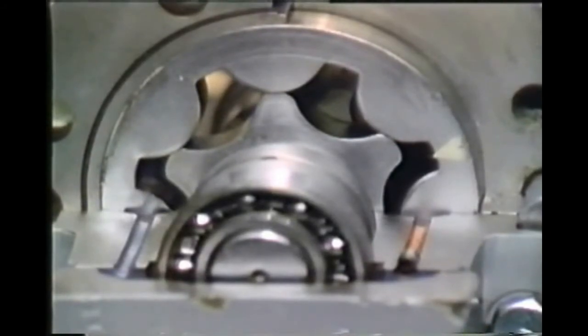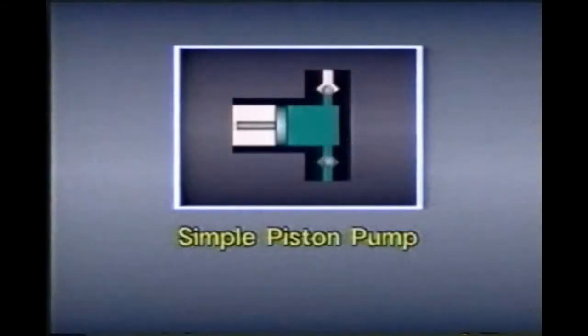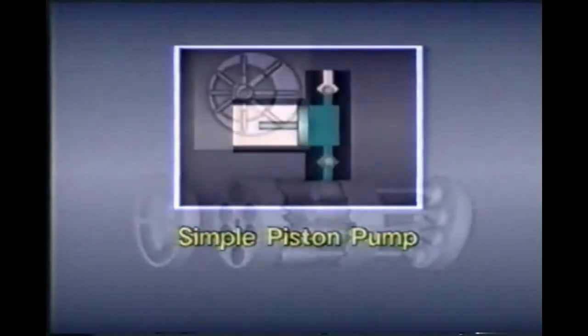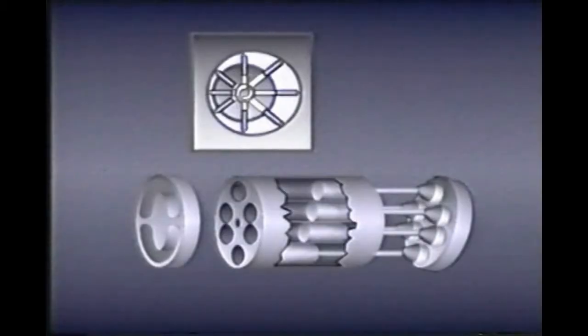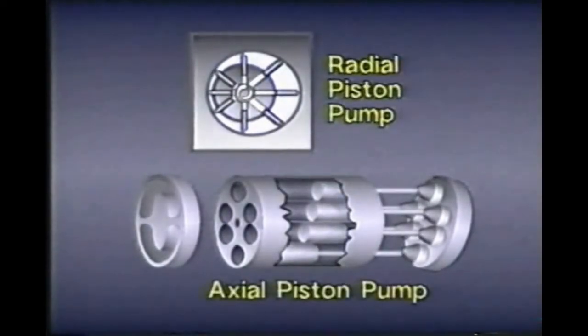Earlier in this course we looked at a simple piston pump with a single piston that produced a pulsating flow. In industry, piston pumps have several pistons so they produce a relatively constant flow. There are two main kinds of piston pumps: the radial and the axial.